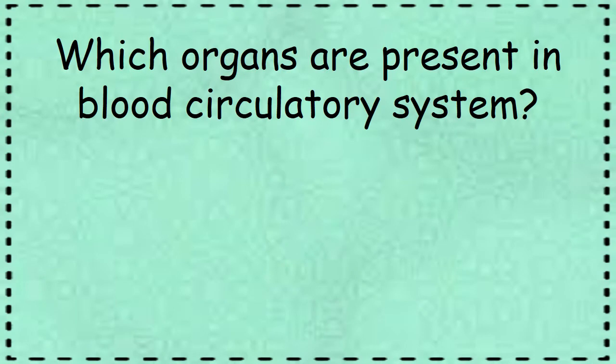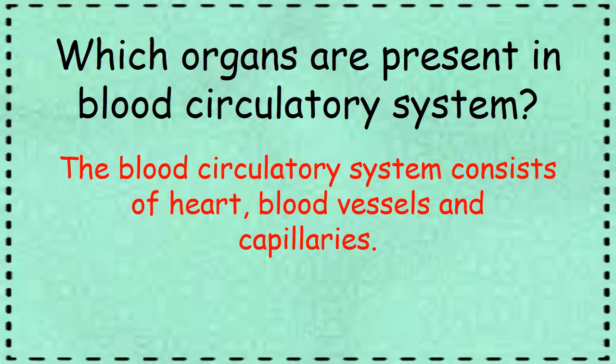Which organs are present in the blood circulatory system? The blood circulatory system consists of the heart, blood vessels, and capillaries. The circulatory system performs the function of transporting various substances like water, hormones, oxygen, soluble nutrients, and waste materials through different organs.